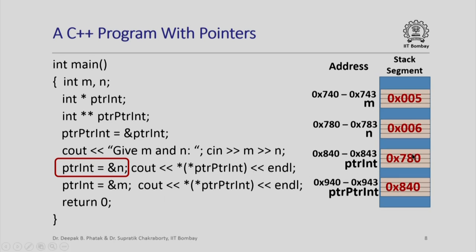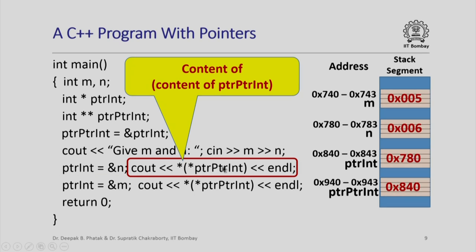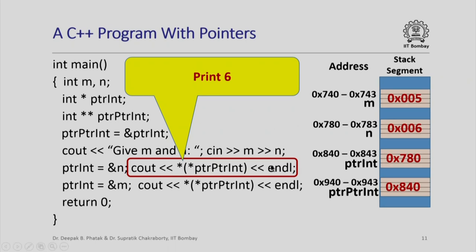Now I say print out star of star of pointer_pointer_int — that is, the content of the content of pointer_pointer_int. The value of pointer_pointer_int is hex 840, so I find the content of hex 840, which is hex 780. Then I find the content of hex 780 by going to that address, and the value stored there is hex 6. So this statement will print 6 followed by an end of line.